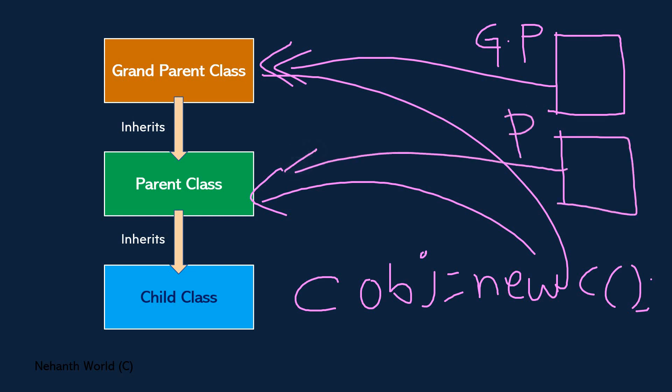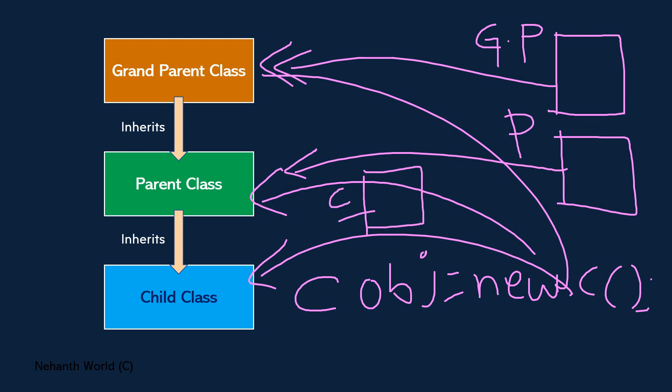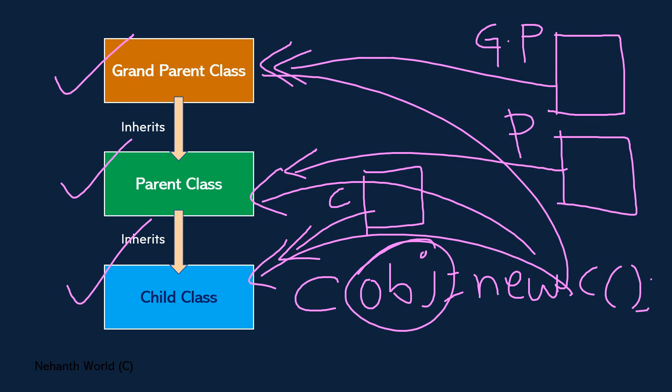Once the parent class constructor call is completed, it tries to call the child class constructor. Memory will be created for the child class. So now memory is created for grandparent, parent, and child — all three classes. Using this particular object we can consume all three class members. That is how it works: memory is allocated for all parent classes, which is why we are able to consume parent class members inside a child class using the child class object.